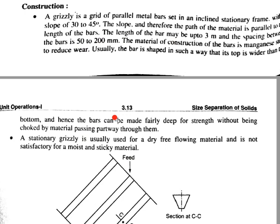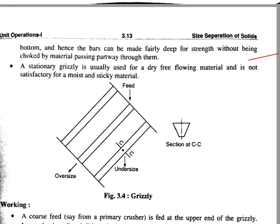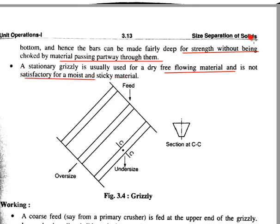The construction material of the bar is manganese. The bar is set in such a way that the top is wider than the bottom. The bars can be made fairly deep for strength without being choked by material passing through. A stationary grizzly is usually used for dry, free-flowing material. It is not satisfactory for most sticky materials.